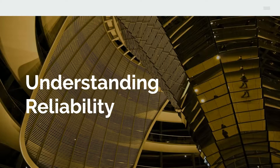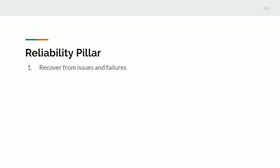Welcome back to the AWS Well-Architected Framework quick study. The next pillar we have to talk about is reliability. Reliability is pretty straightforward — it just means that you recover from issues and failures. So if something crashes, you're not going to take like a day or something to recover.